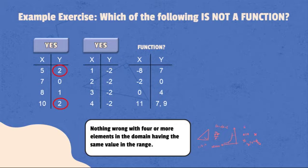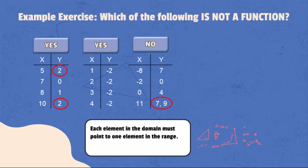This third example, function or not? Unfortunately, this example have violated one of the rules of a function. Each element in the domain must point to one element in the range. Since 11 is associated with 7 and 9 in the range, this is disqualified to be a function.